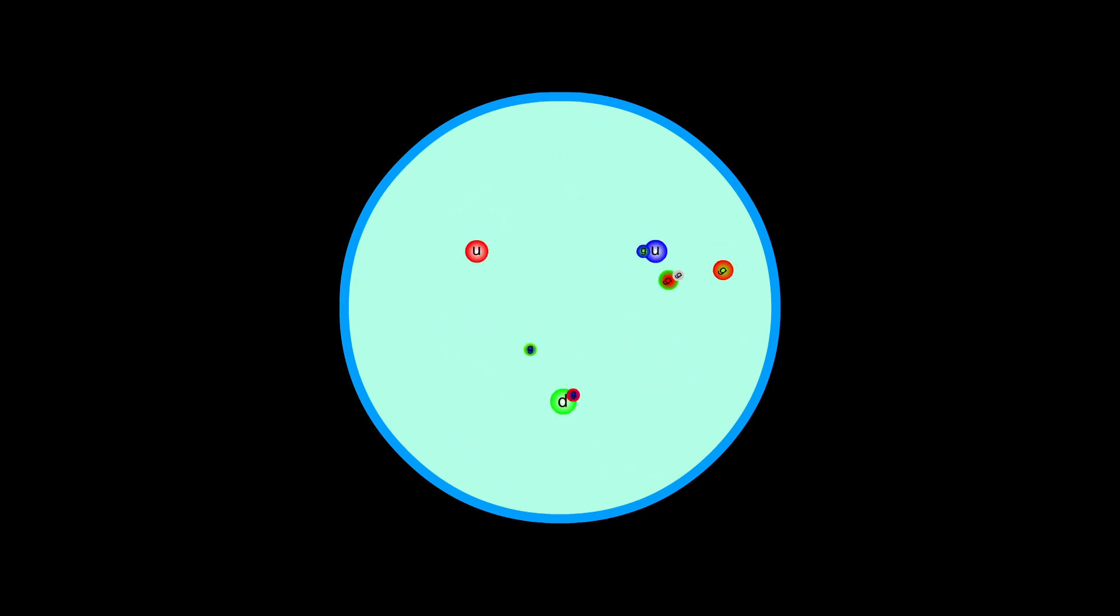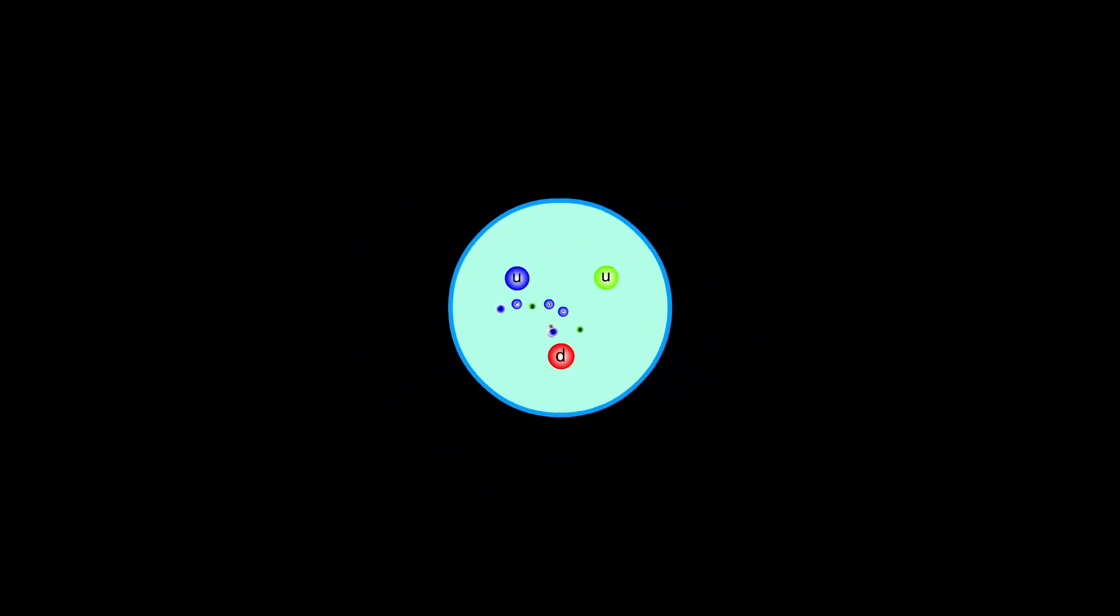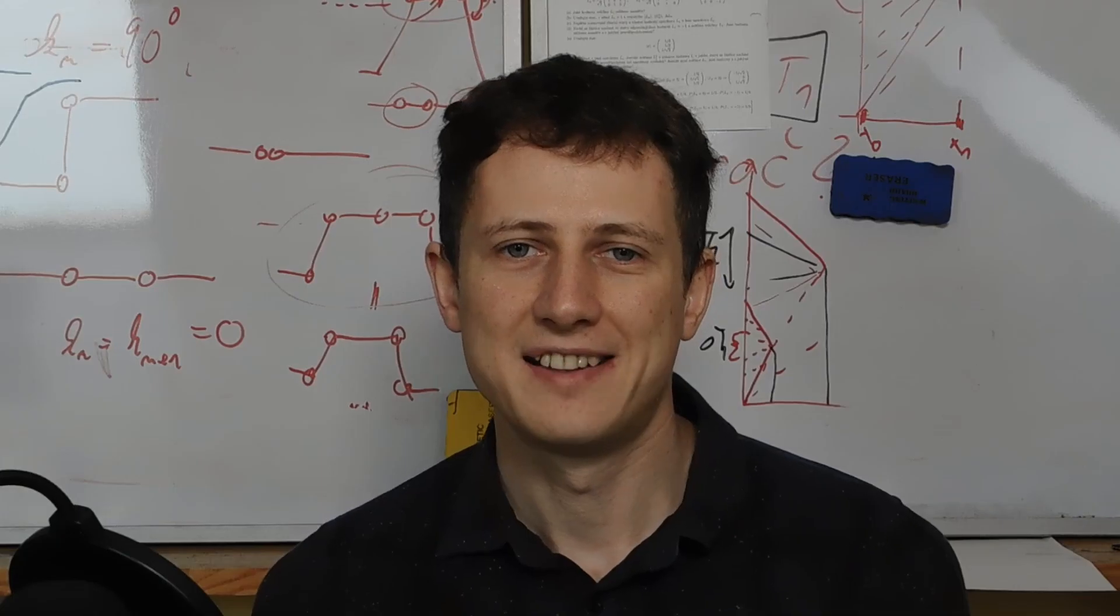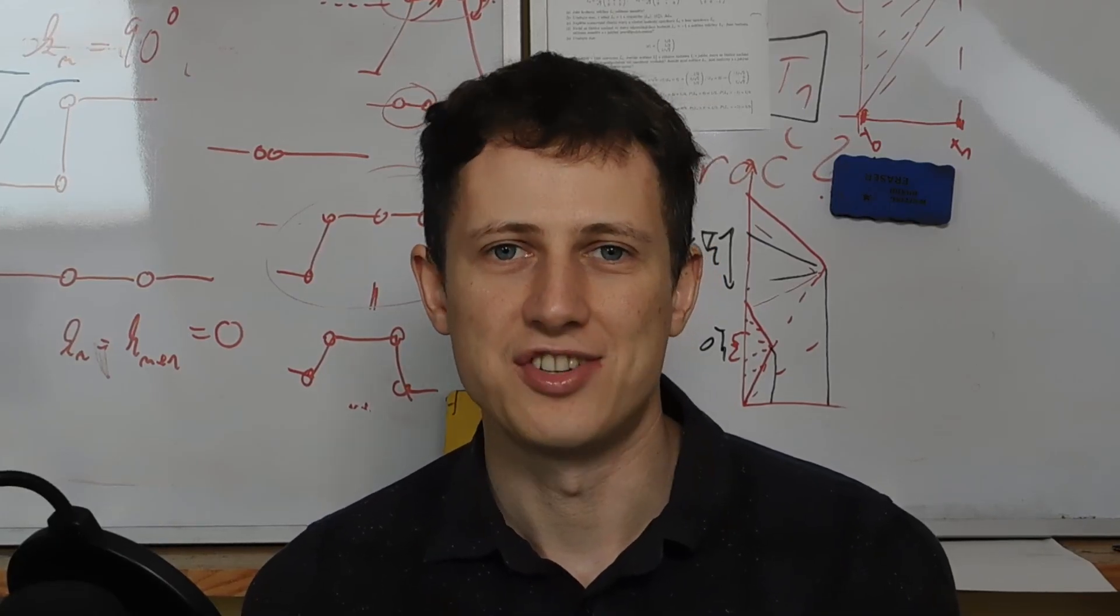Extremely rich and complicated dynamics is going on inside the proton if you take a look at it from close distance. And it only looks like three quarks from the outside, as all the messy interactions average out. And if you look at it from even further away, you only see a point particle with integer electric charge. And this is the magic of energy scale.